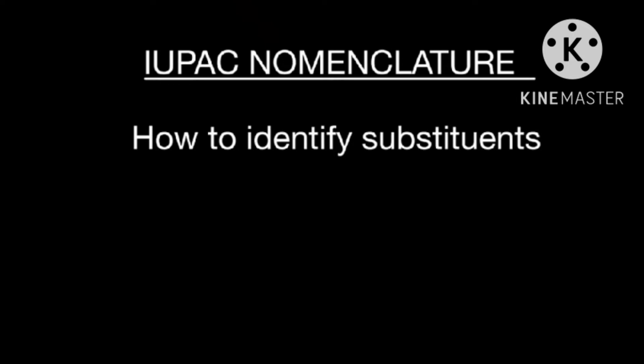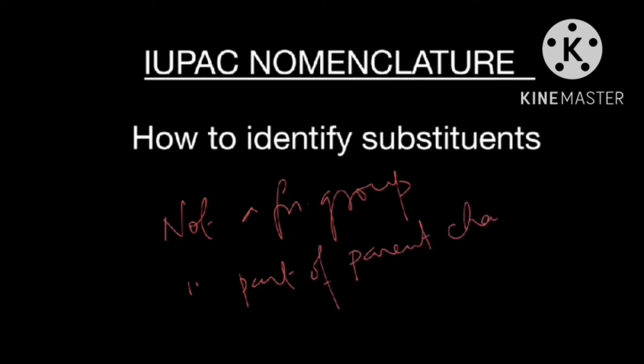The functional group, the parent chain, and everything else is a substituent. So anything that is not a functional group or which is not part of parent chain is a substituent. That's it. Let's see some examples and see how we can apply this rule.